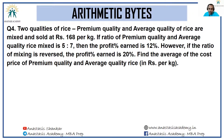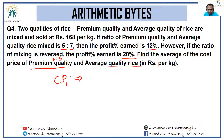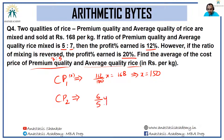Two quantities of rice — premium quality and average quality — are mixed and sold at ₹168 per kg. If the ratio of premium to average is 5:7, the profit is 12 percent. If the ratio is reversed to 7:5, the profit is 20 percent. Find the average cost price. In case 1: 112/100 × x = 168, giving CP = ₹150. In case 2: 120/100 × y = 168, giving CP = ₹140.